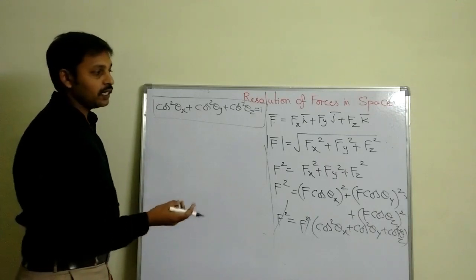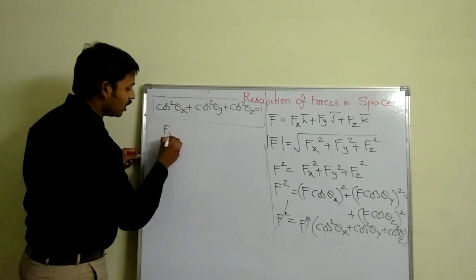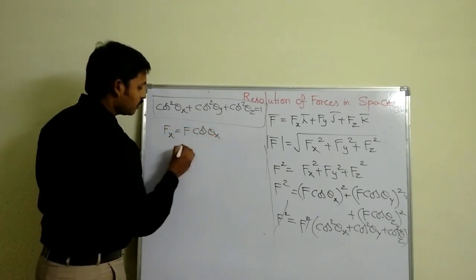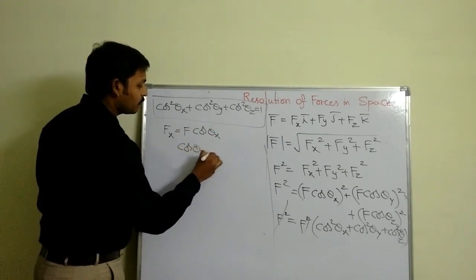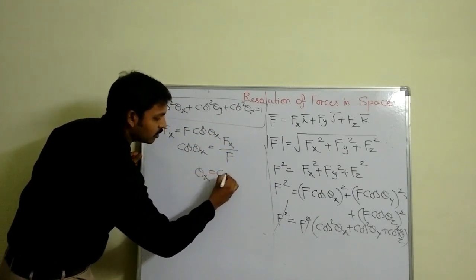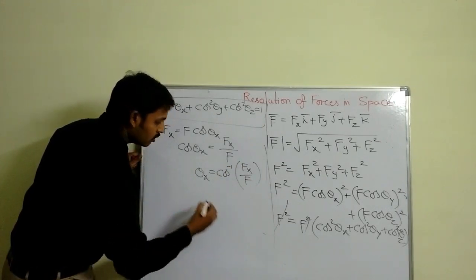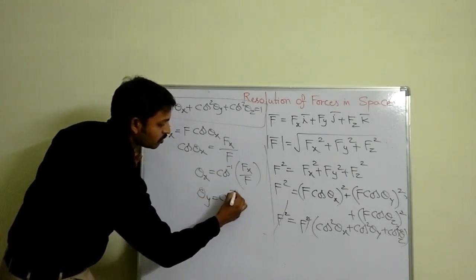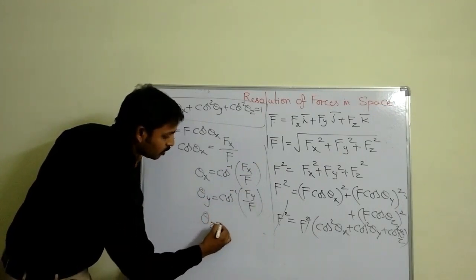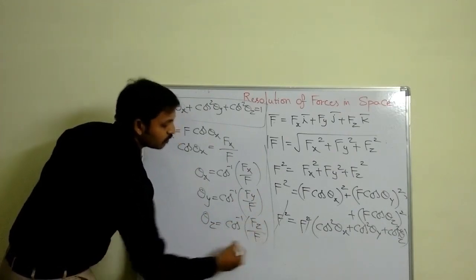If I want to find the direction angles theta_x, theta_y, and theta_z, I can use the earlier relations. From Fx = F cos theta_x, we get cos theta_x = Fx / F, so theta_x = cos inverse (Fx / F). Similarly, theta_y = cos inverse (Fy / F), and theta_z = cos inverse (Fz / F).